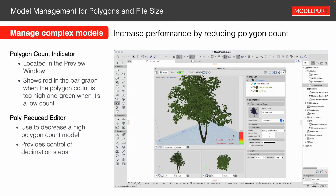For a tree, you would never even notice it because you're never going to look that closely at it. But it gives you the ability to bring in some good content and control the performance of it. Just like the sync I had earlier — I could have taken that Revit sync, converted it over, taken it into model port, and used this polyreduction to manage that file size.